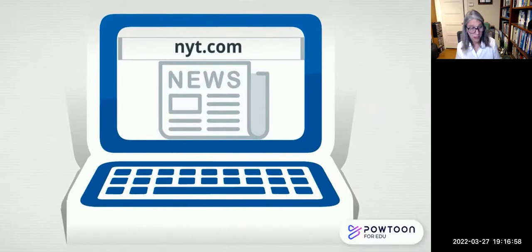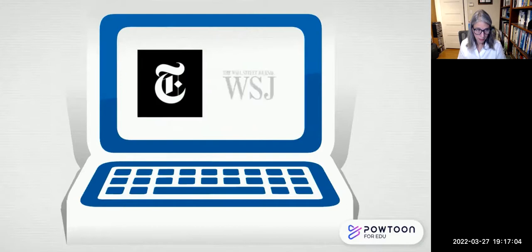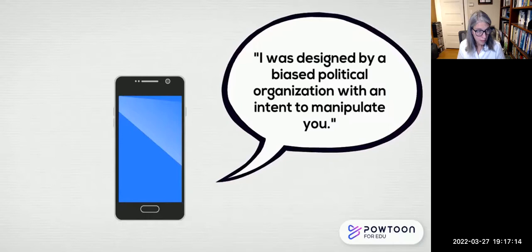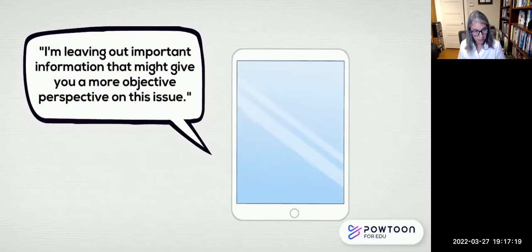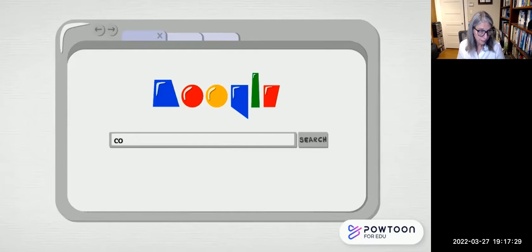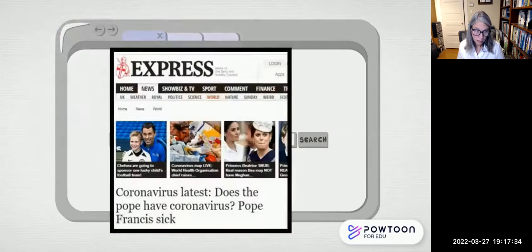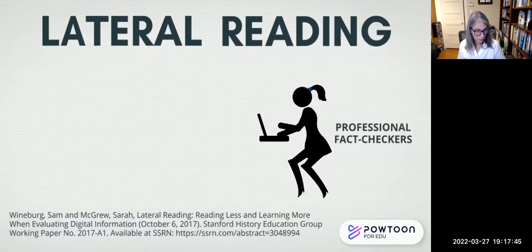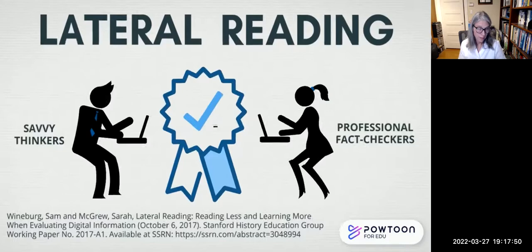Relying on superficial markers is problematic because most websites won't say 'I was designed by a biased political organization to manipulate you,' or 'I'm leaving out important information,' or 'I was written by an uninformed person.' So how do we improve our ability to evaluate websites? By using a skill called lateral reading — a simple concept used by professional fact checkers to judge the credibility of unfamiliar sources.